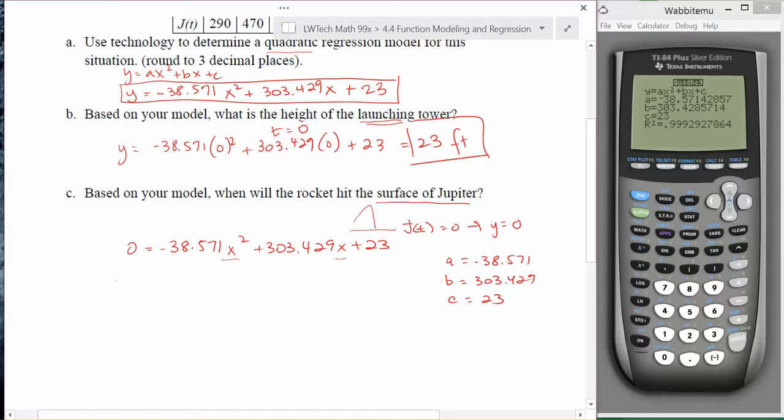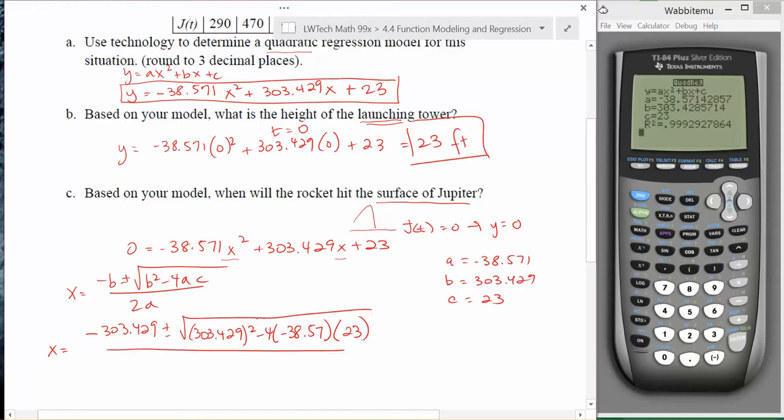Once we have all of those points identified, we're going to go ahead and plug our values into the quadratic equation. That's x equals negative b plus or minus the square root of b squared minus 4ac, all divided by 2a. Now, let's plug our points in. Negative 303.429 plus or minus the square root of 303.429 squared minus 4 times negative 38.571 times 23, and all divided by 2 times negative 38.571.